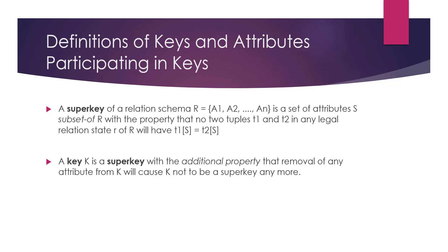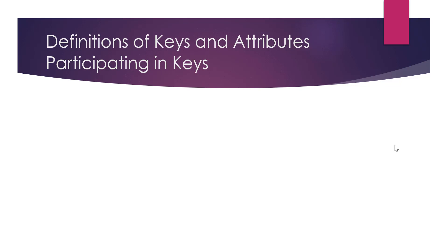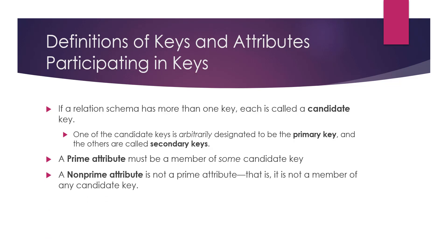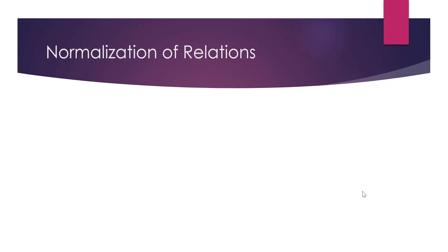A key is a superkey with an additional property: if we remove any attribute from that key, it will no longer be a superkey. If we have more than one key in our relation, each one is called a candidate key. We select one of these candidate keys to be our primary key, and all the other keys will be called secondary keys. A prime attribute is a member of one candidate key. If an attribute is not part of any candidate key, we call it a non-prime attribute.